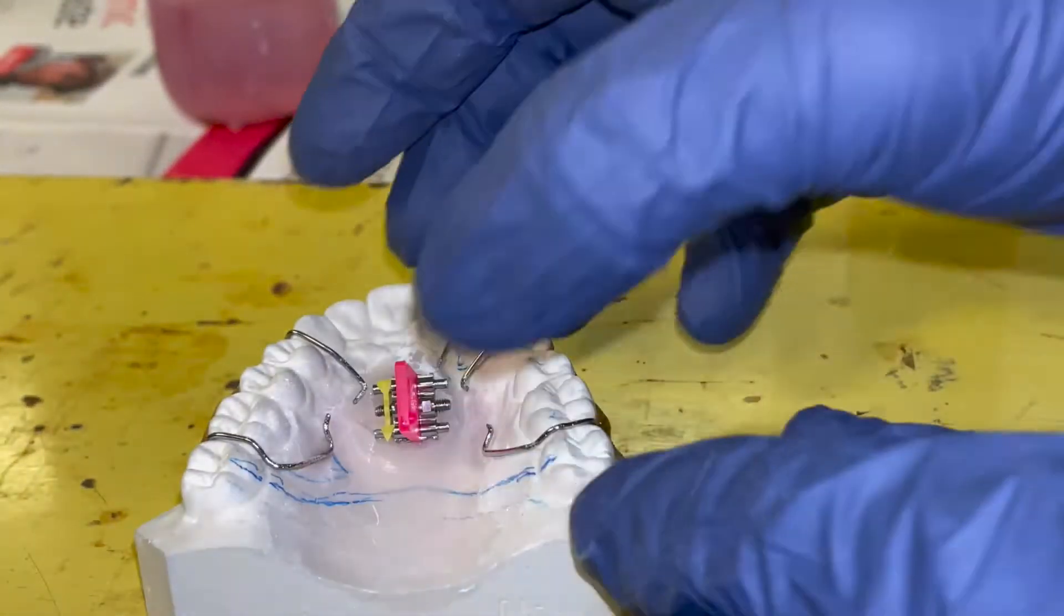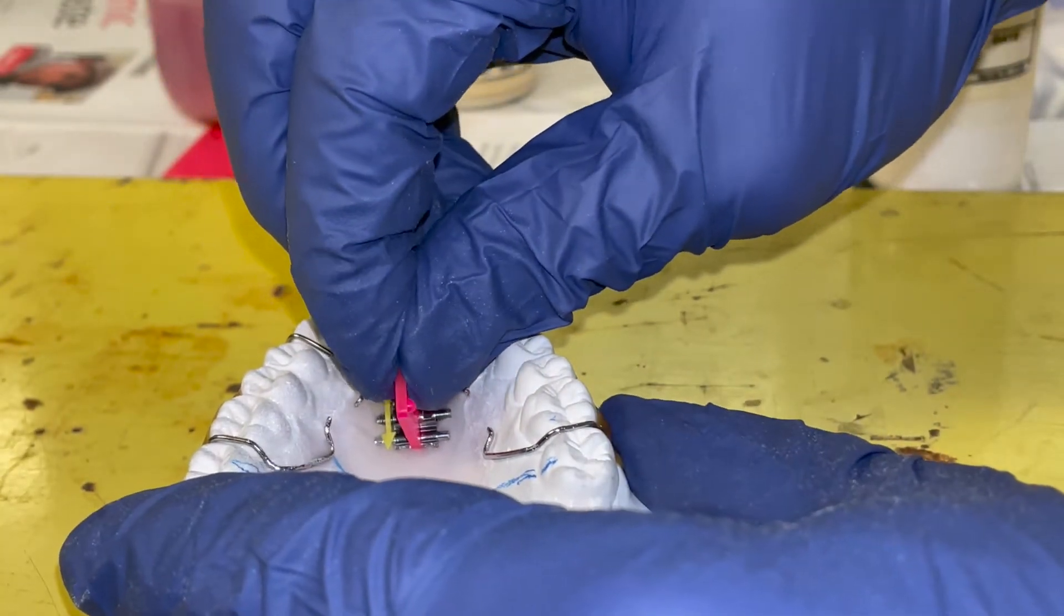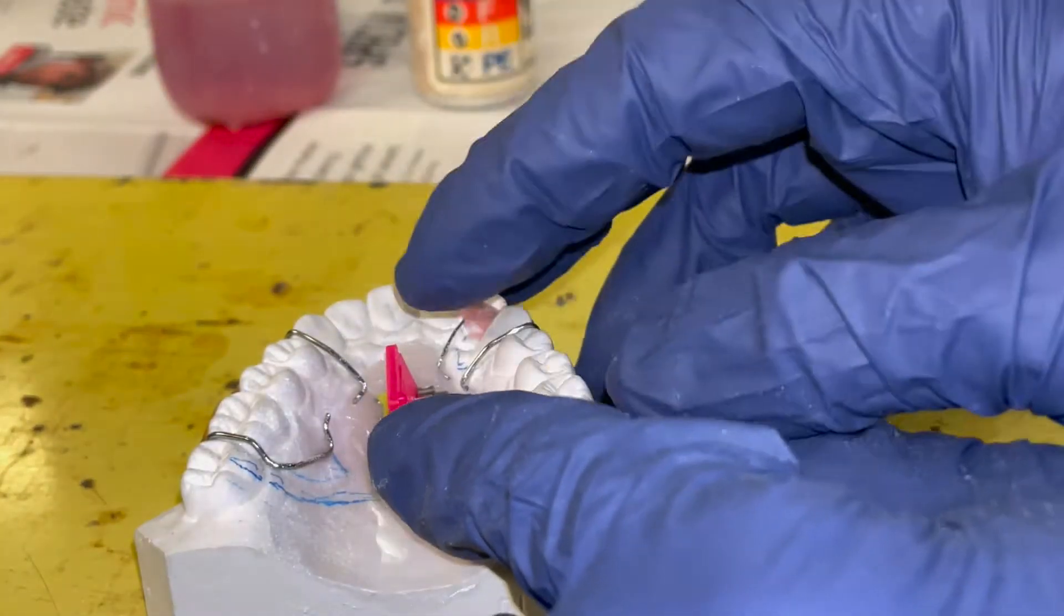Once you have a decent amount of acrylic, we want to press our expansion screw in and position it so we're going to make sure it's straight and flat.